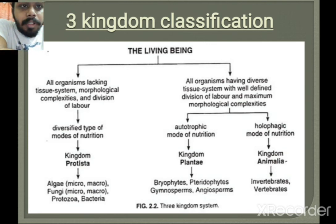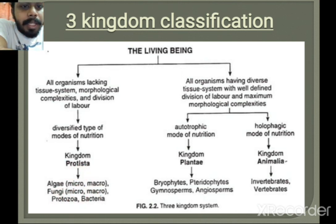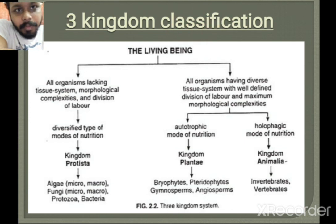However, the three kingdom classification system also has a disadvantage: bacteria, or prokaryotic organisms, are different from algae and fungi, yet they are all placed in the same Protista kingdom. Prokaryotic organisms must be classified differently in another kingdom. For this reason, the five kingdom classification system was later introduced. Thank you for watching this video.